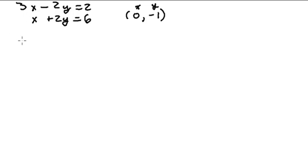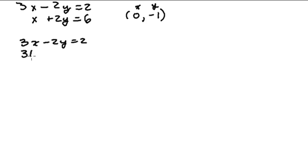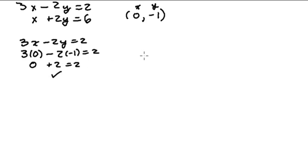First we'll check the first equation: 3x minus 2y equals 2. Plugging in 0 for x and negative 1 for y, we get 0 minus 2 times negative 1, which simplifies to plus 2 equals 2. That checks out, so (0, negative 1) is a solution for the first equation.